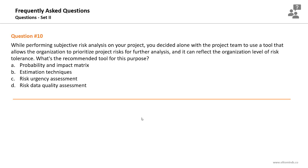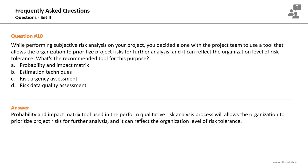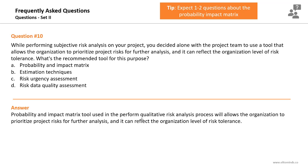Question number ten. While performing subjective risk analysis on your project, you and the project team want to use a tool that allows the organization to prioritize project risks for further analysis and can reflect the organizational level of risk tolerance. The recommended tool is definitely the Probability-Impact (PI) Matrix. It is used in the subjective risk analysis process, allows the organization to prioritize project risks, and reflects the organizational level of risk tolerance. Expect a minimum of two questions in the exam about the probability impact matrix.